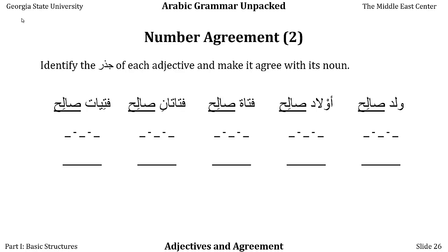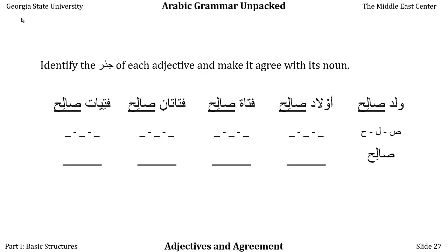Let's do some more examples using human plurals. Non-human plural is feminine singular, but human plural is plural. We have walad salih — salih means virtuous or good, walad is a boy. The jidhr is sad-lam-ha. Since walad is a masculine singular noun, salih stays masculine singular. Notice salih has the fa'il wazn, not the fa'il wazn — there are exceptions.